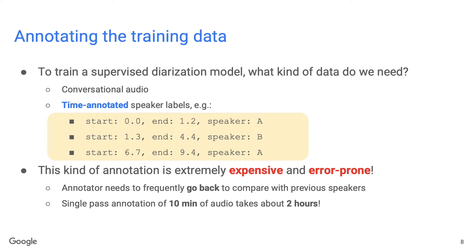Supervised diarization is definitely great, but for supervised diarization approaches, if we want the model to work well, we need lots of high-quality training data. So what kind of data do we need? First, we need the conversational audio, and together with the audio, we need time-annotated speaker labels. For each turn, we need the start time, the end time, and the speaker label.